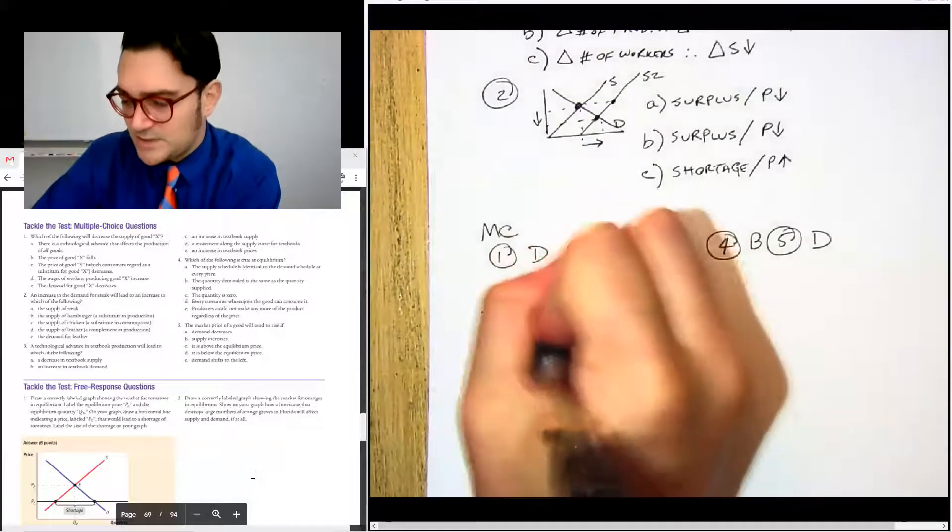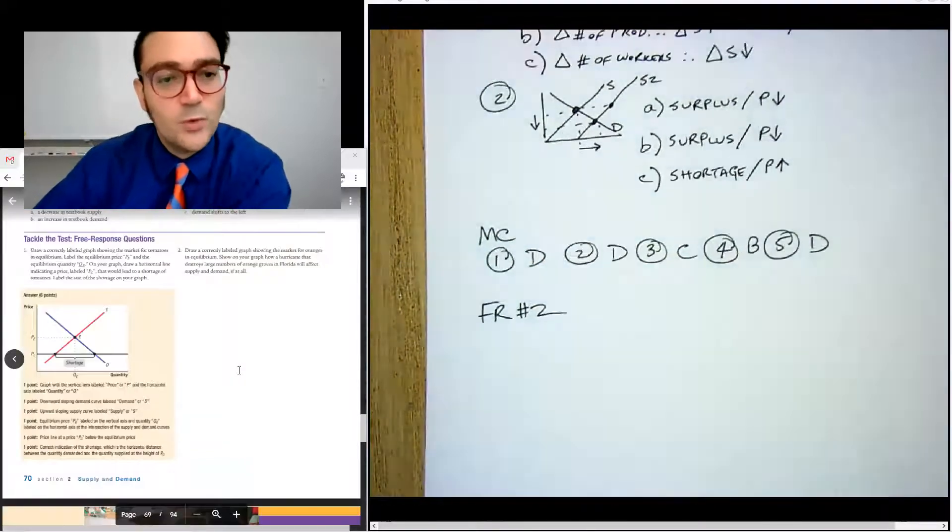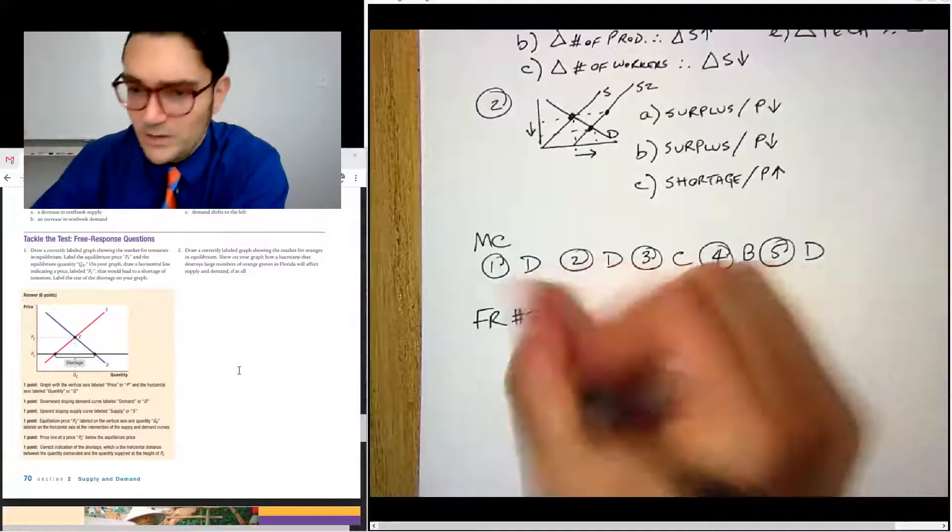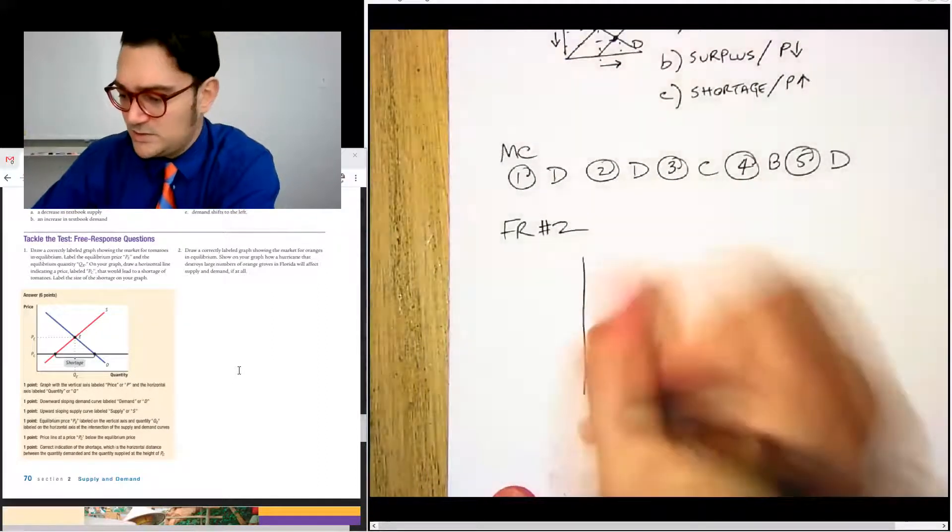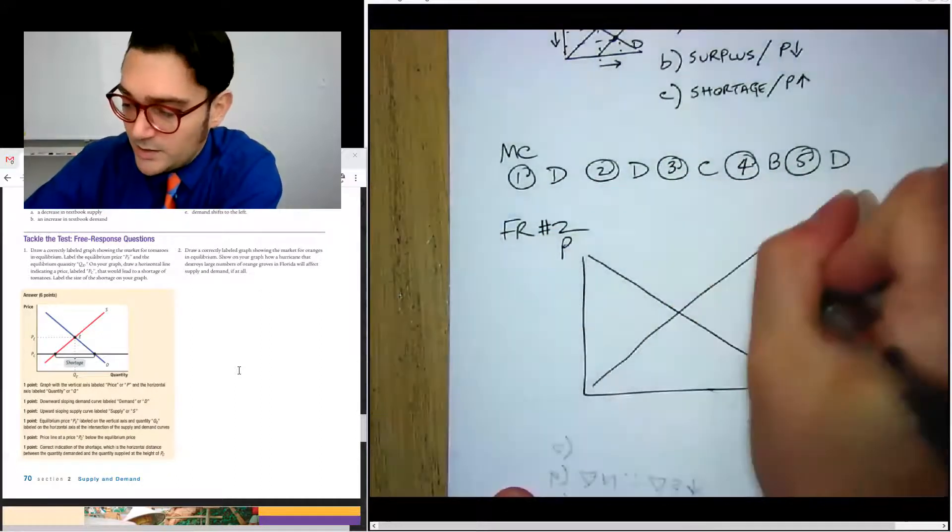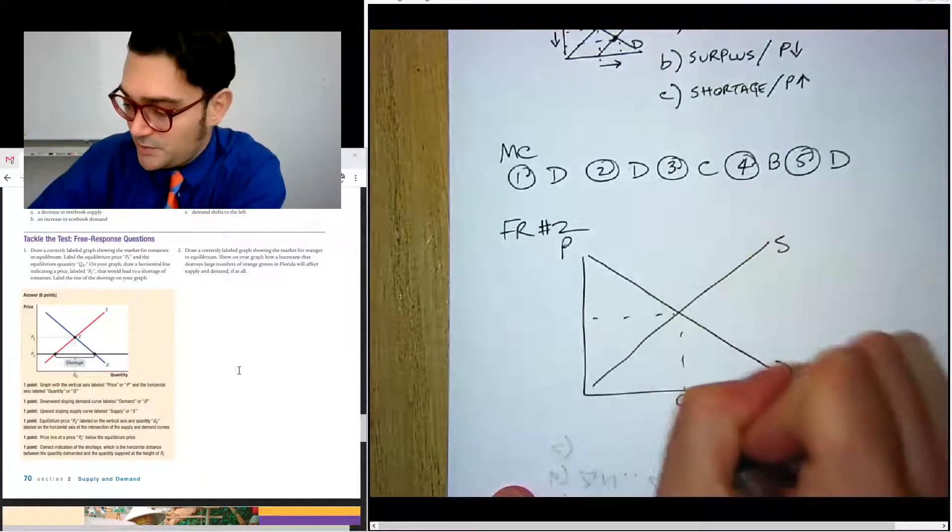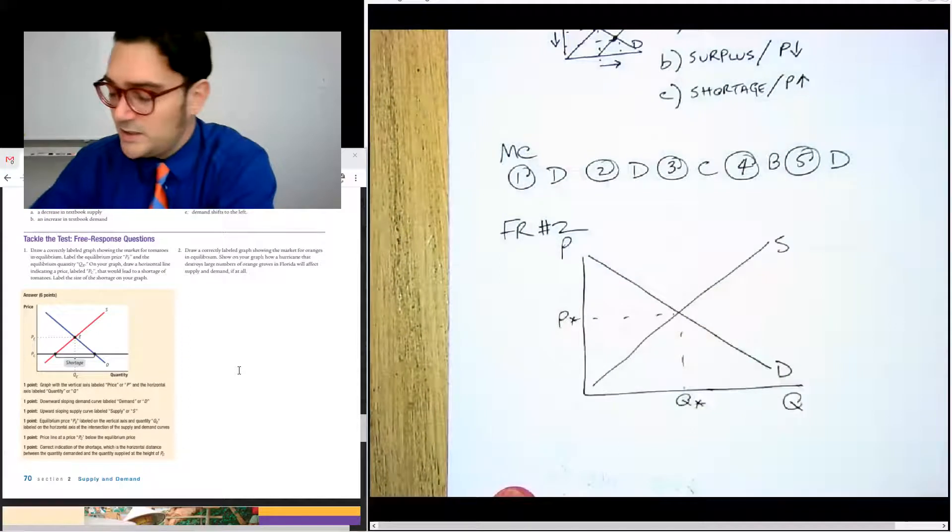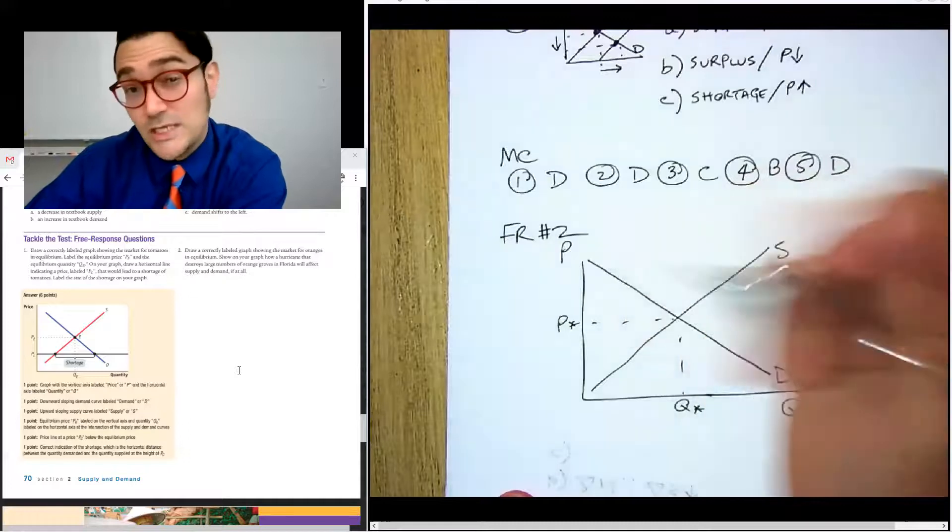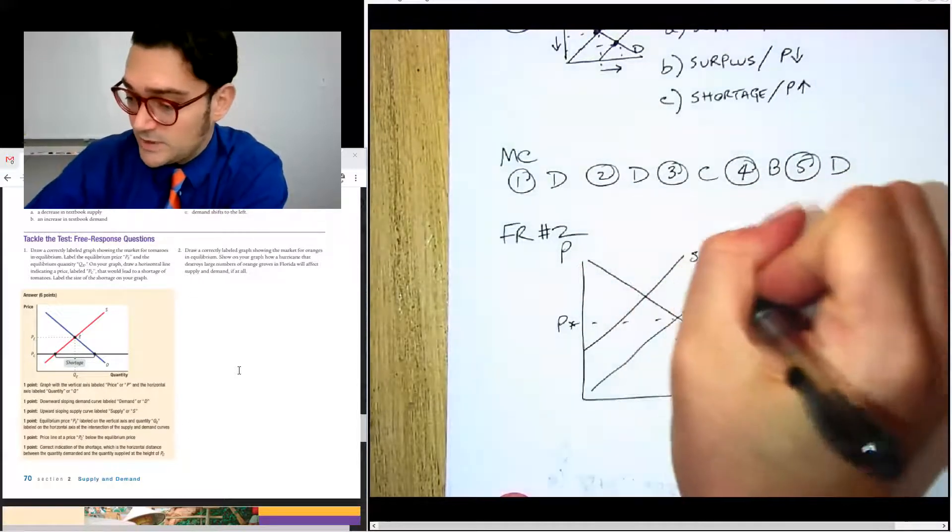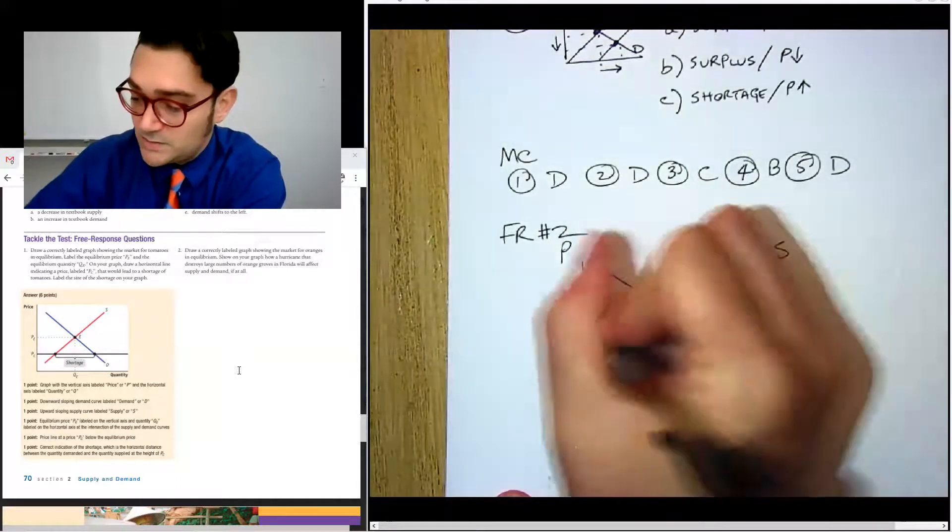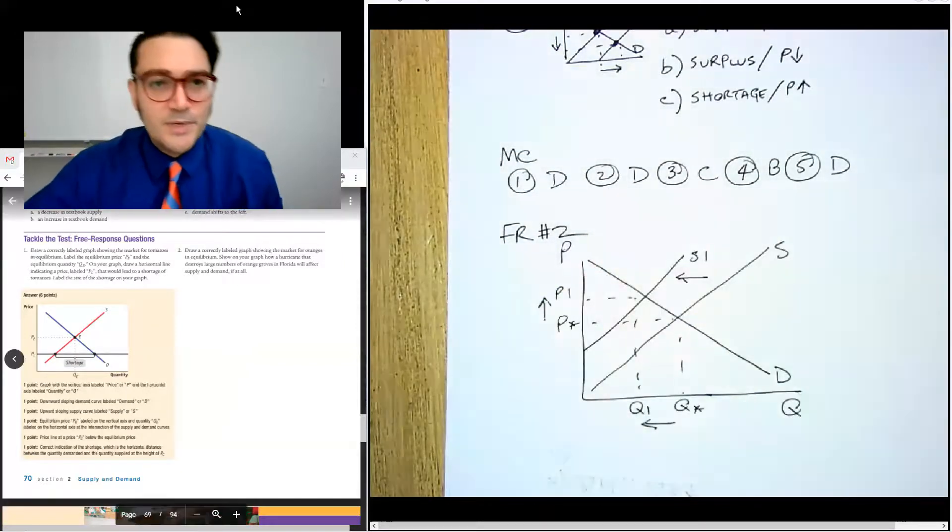And let's take a look at free response. Number two, draw correctly labeled graph showing the market for oranges and equilibrium show how a hurricane that destroys a large number of groves will affect supply and demand at all. Okay. So let's move that just a little bit. So for this one, we're going to want both supply and demand on our graph, demand and supply, put some dashes here, Q star, P star. So that's where we're starting. And if there's a huge hurricane that destroys the orange groves, that'll affect the supply and it should decrease the supply. So S one decrease, and we'd say Q one decrease, P one increase. Bada bing, bada boom. See you later.